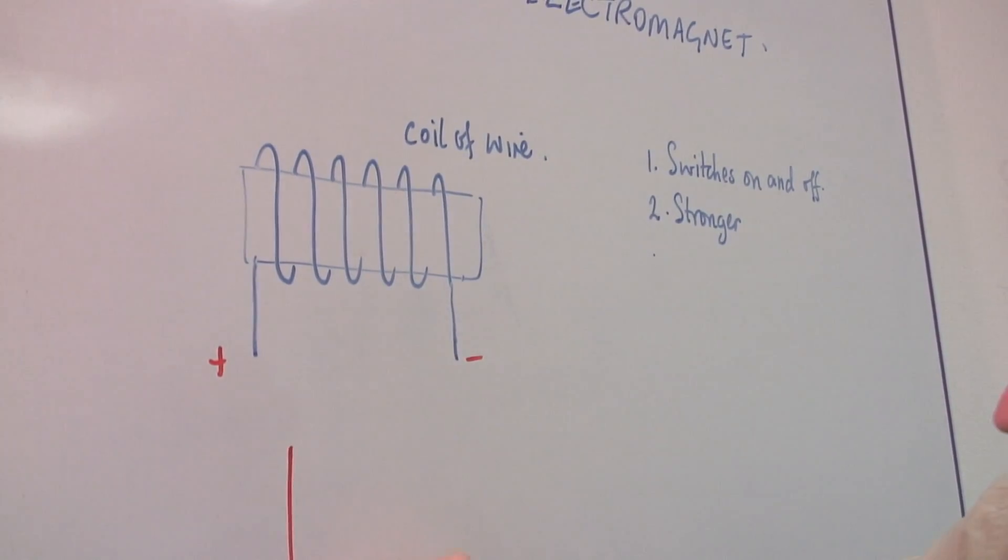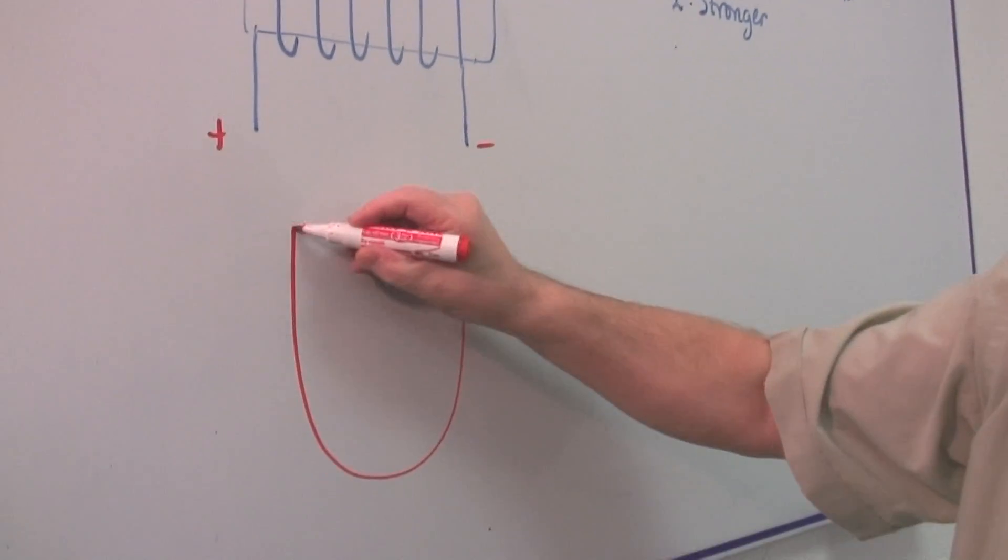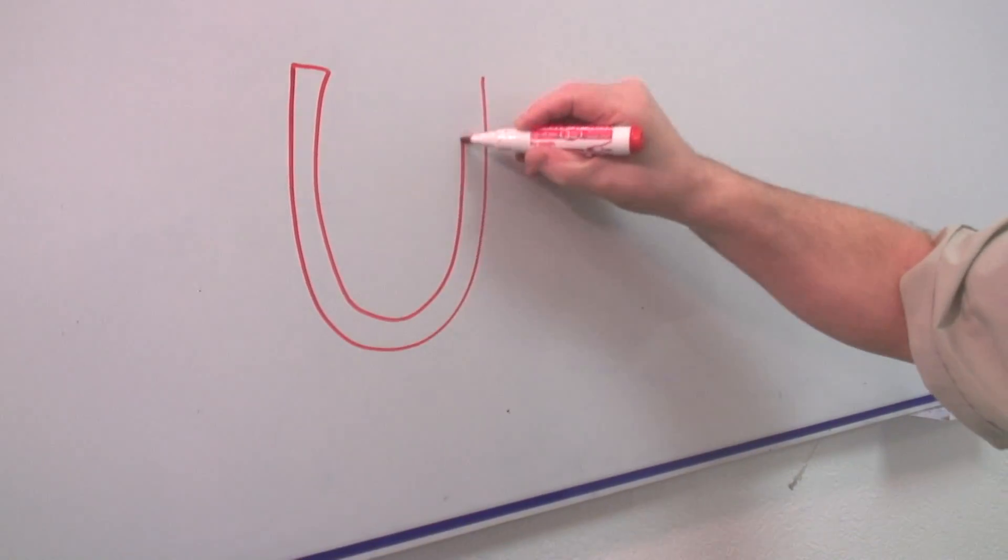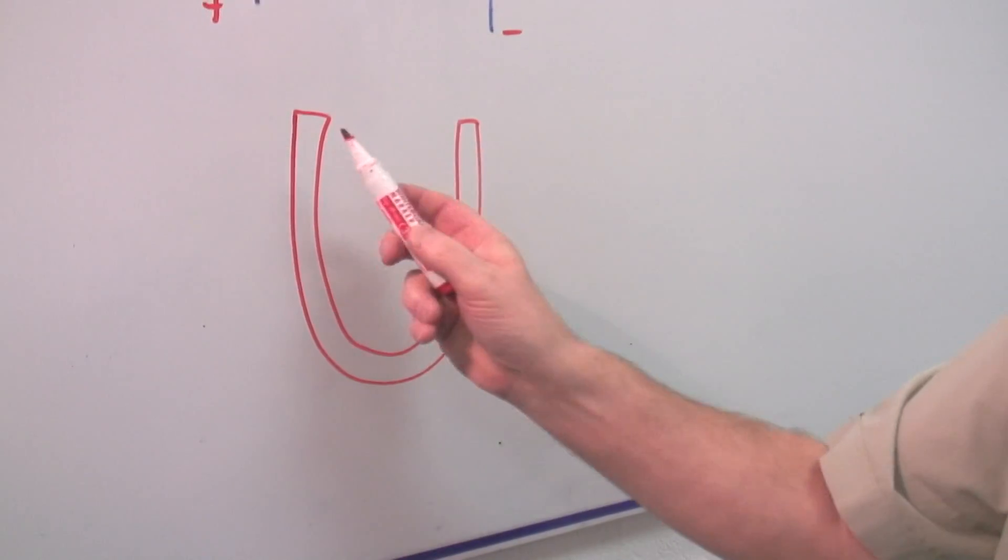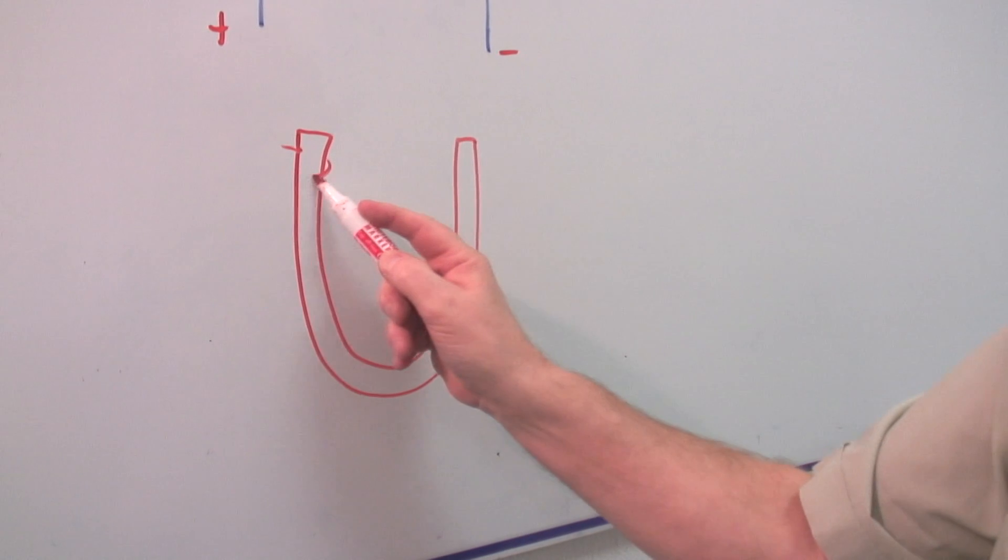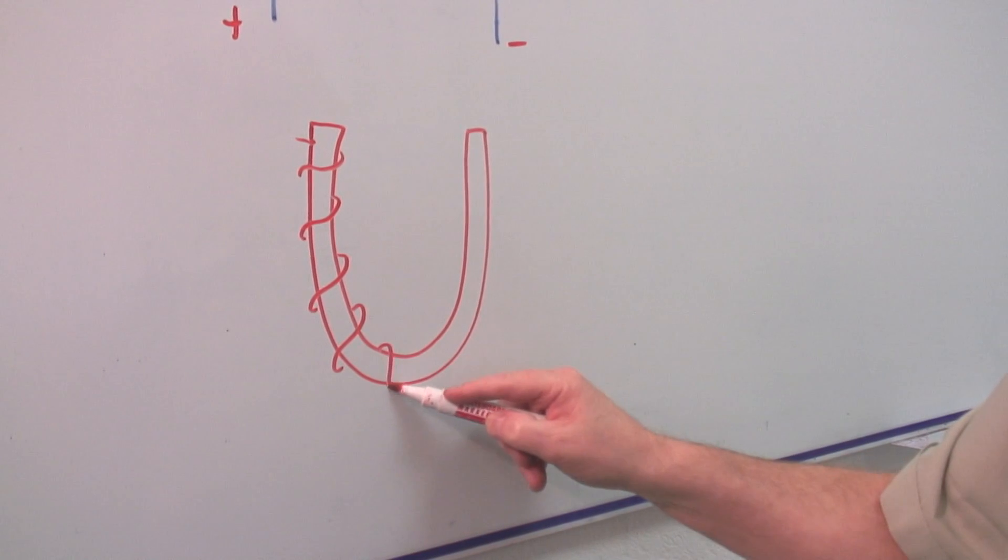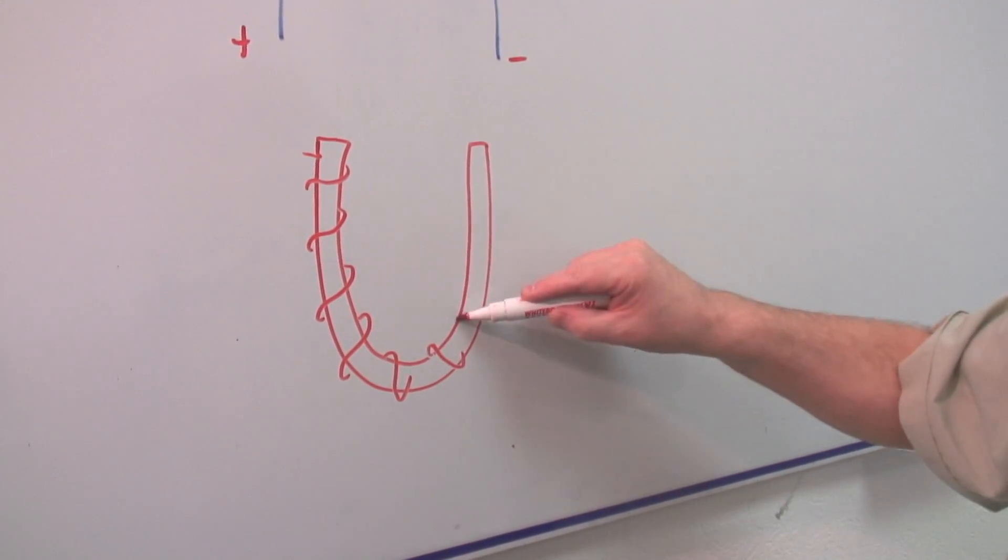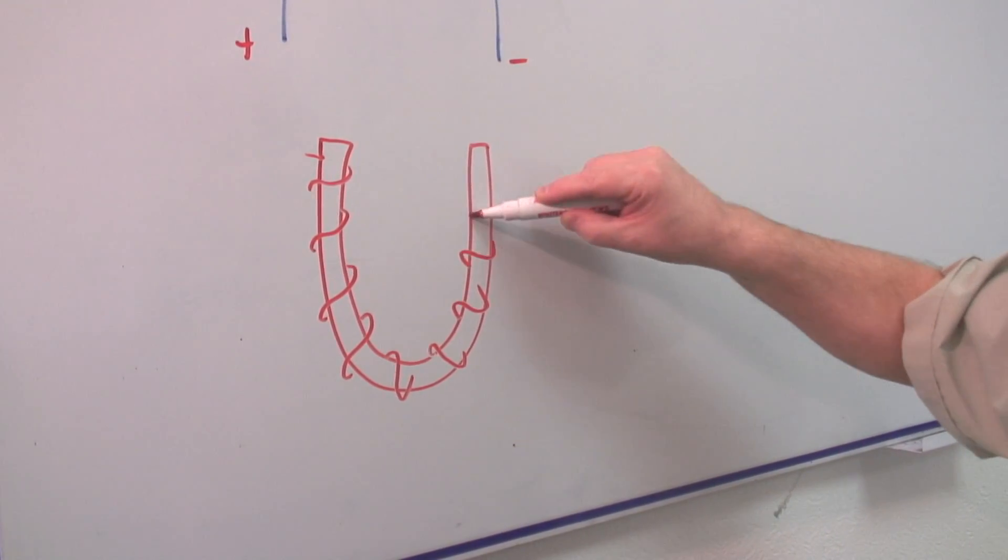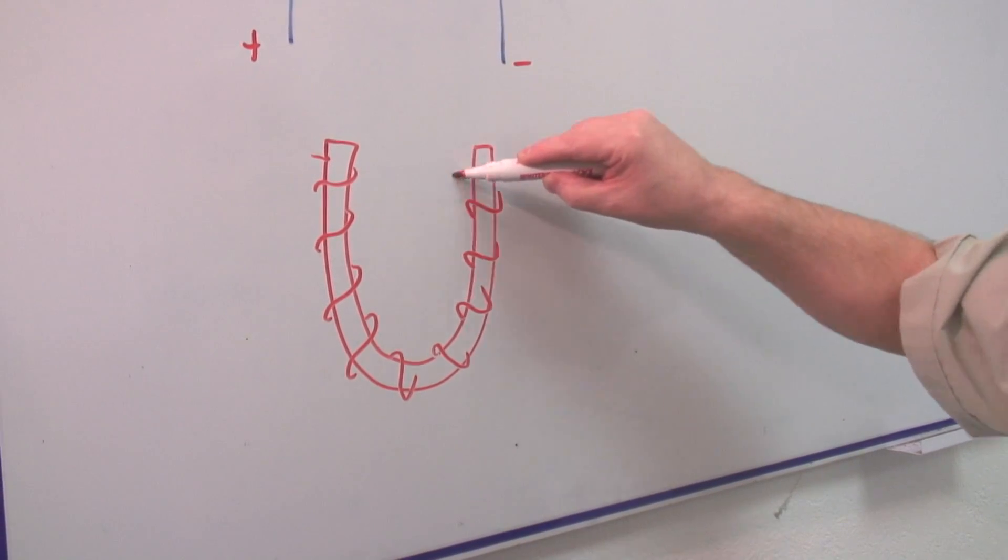Some magnets are this shape, and the wrapping of the wire around this is exactly the same. You start here and wrap it, and it keeps wrapping all the way around. I'm just doing a few of these turns, but it doesn't make any difference. It is simply of that kind of shape.